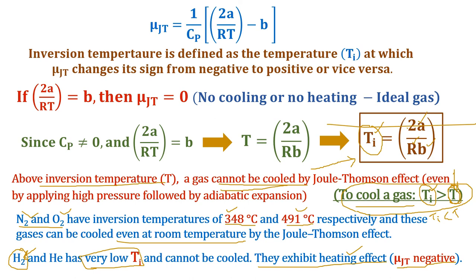In summary, inversion temperature is the temperature at which µJT changes its sign from negative to positive. If Ti equals 0, the gas behaves ideally. If Ti is greater than T, the gas undergoes cooling. If Ti is less than T, the gas undergoes heating. Inversion temperature is related to the Joule-Thomson coefficient, and knowing the Joule-Thomson effect, the coefficient for ideal gas (which equals 0), and for real gases, we arrive at the concept of inversion temperature, which is used for liquefying gases.